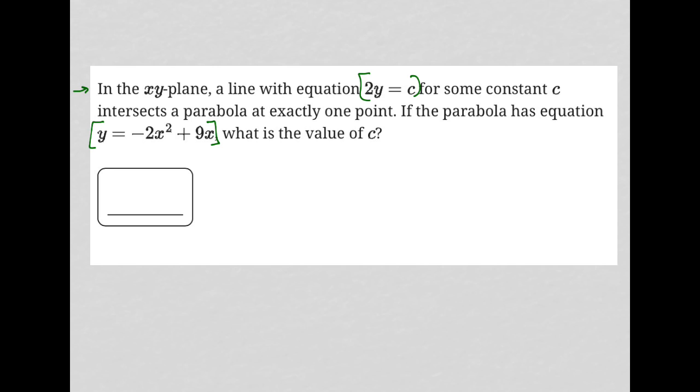The first thing is that it says these two things intersect at exactly one point. In order for them to intersect at exactly one point, that means at that point they share an ordered pair. So although we have two separate equations, 2y = c and y = -2x² + 9x, really at the point of intersection this is a single point.